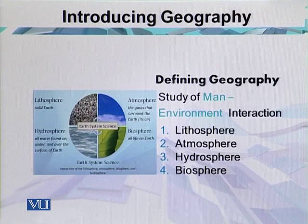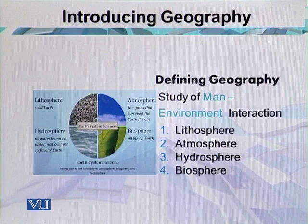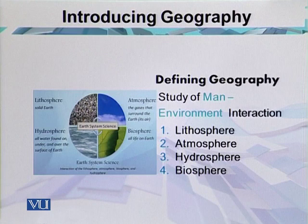In the lithosphere, we study things related to the crustal environment or continental areas. This part of the world is 29% of total land. It has different environments — some areas are covered with mountains, some are lowland, some are plateau areas, some are desert areas, and some are coastal environments. This area is home to different human settlements like urban and rural environments, agricultural activities, and industrial activities.